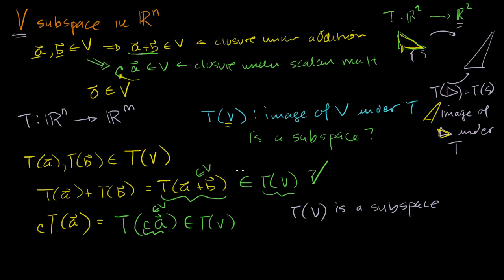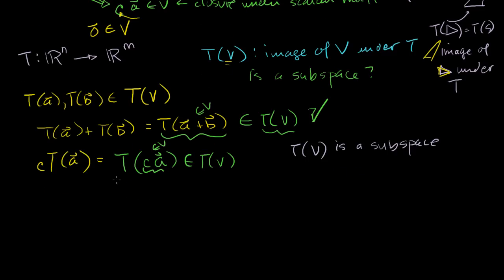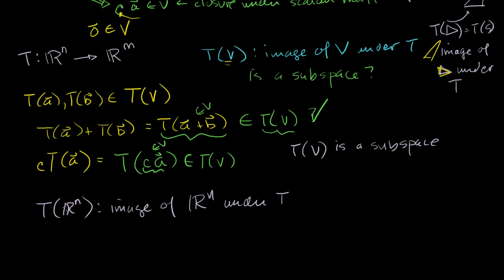This might naturally lead to the question: everything we've dealt with so far has been subsets or subspaces, but what if we take the image of all of Rn under T? This is the set of all T(x) where x is a member of Rn — you take each member of Rn, transform it, and create this new set. This is the image of Rn under T.